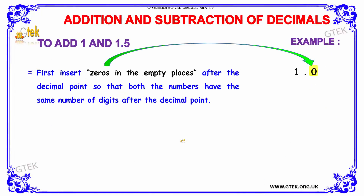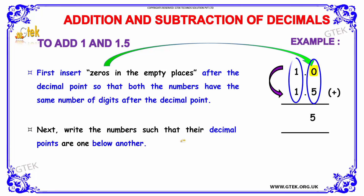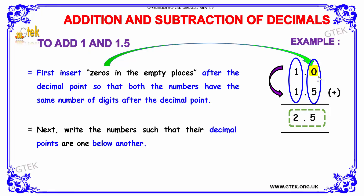Let's see some examples. We have an example where we are going to add 1 and 1.5. The first thing we must do is insert zeros in the empty place. Since the question is 1, which needs to be added with 1.5, we have added 0 in the empty place, highlighted in yellow. Once after filling up the 0 in empty places, we add the decimal point so that both numbers have the same number of digits after the decimal point.